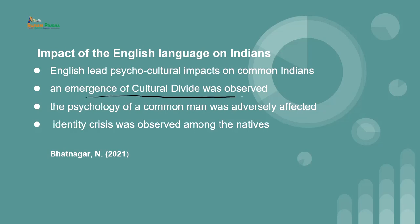So there was a psycho-cultural impact that was commonly observed at that time, and there was a little conflict also that was emerging into a bigger conflict. This psycho-cultural impact brought identity crisis among the learners. Professor Bhatnagar also observed an emergence of cultural divide — there were people following English language and its culture, but a great mass was also following their own culture and was not ready to get ruled by the English invaders. The psychology of a common man was adversely affected as the culture was getting compromised.